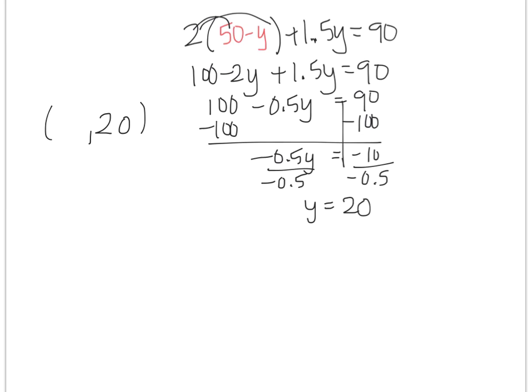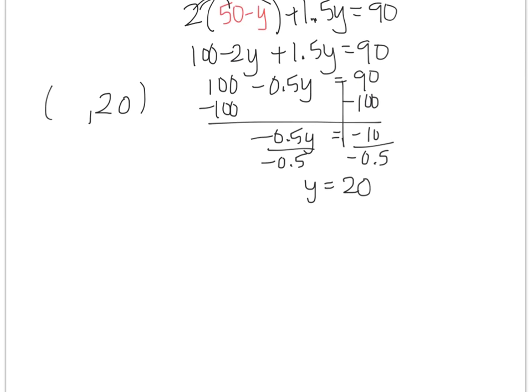Now I have to find out what x is. So I'm going to take the equation, and I'm going to take the one that's simpler. So I'm going to go back up to the original, and I'm going to use the x plus y equation. And I'll figure out how many of the x burgers there were. So x plus 20 equals 50. And so that meant that x is 30.